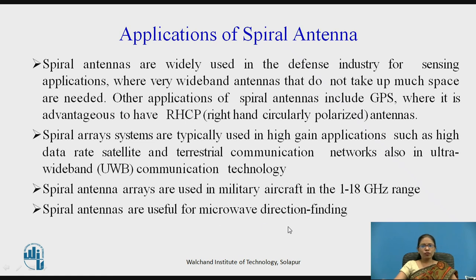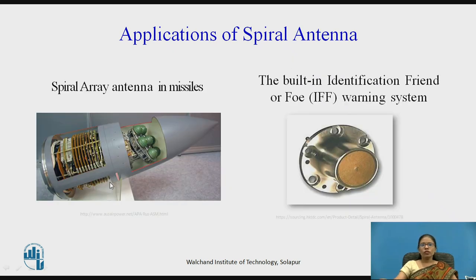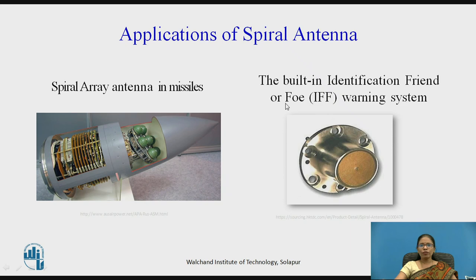Spiral antennas are useful for microwave direction finding. Pictorially, some applications are shown — a spiral antenna array where multiple spiral antennas are arranged to form an array used in missiles. Also, spiral antennas are mounted for identification of friend or foe (IFF) warning systems.